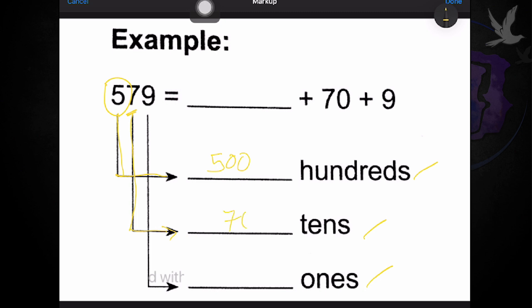So, okay, seven zero, seventy. And for our ones, we have nine. All you have to do is to write nine in our ones.